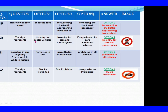Question 50: The sign represents. Option 1: No entry for motor vehicle. Option 2: No entry for cars and motorcycles. Option 3: Entry allowed for car and motor vehicle. The right answer is Option 2: No entry for cars and motorcycles. Question 51: Boarding in and alighting from a vehicle while in motion. Option 1: Permitted in bus. Option 2: Permitted in auto-rickshaw. Option 3: Permitted in all vehicles. The right answer is Option 3: Prohibited in all vehicles.